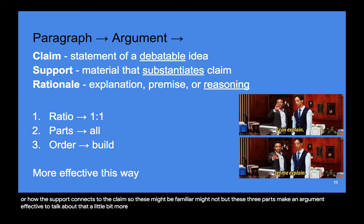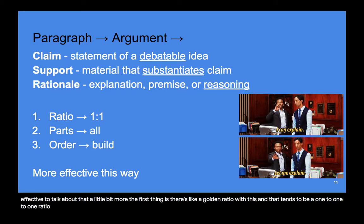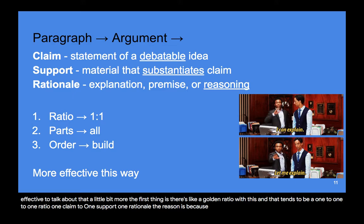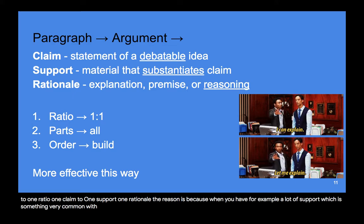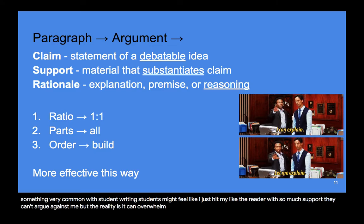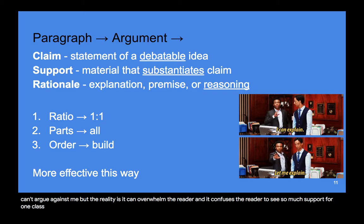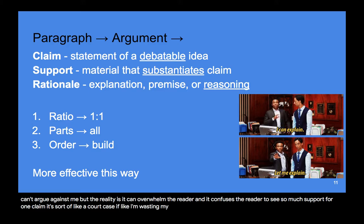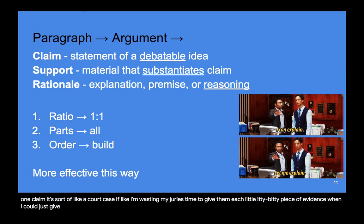There's a golden ratio with this, and that tends to be a one-to-one-to-one ratio: one claim to one support to one rationale. When you have a lot of support — which is very common in student writing — students might feel like they're overwhelming the reader so they can't argue back. But the reality is it can overwhelm and confuse the reader. It's much more efficient to tie one claim to one support, like giving a jury the confession rather than every small piece of evidence.